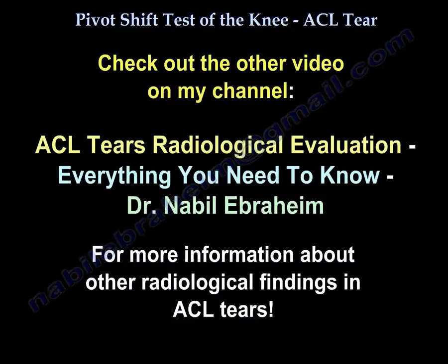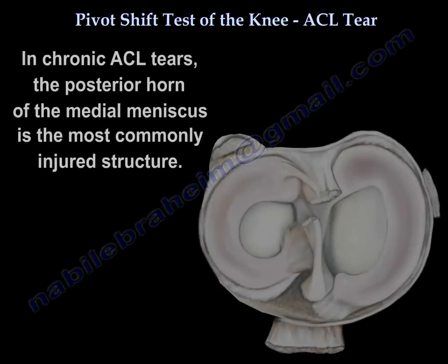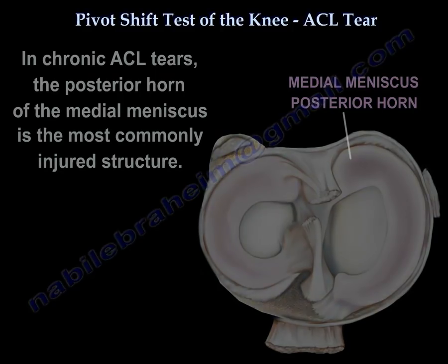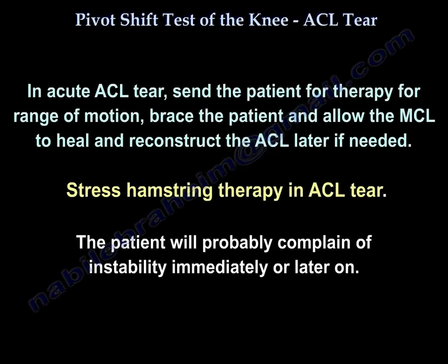Other radiological findings can be seen in ACL tears. In chronic ACL tears, the posterior horn of the medial meniscus is the most commonly injured structure. In acute ACL tear, send the patient for therapy for range of motion, brace the patient and allow the MCL to heal, and reconstruct the ACL later if needed. Stress hamstring therapy in ACL tear. The patient with an ACL tear will probably complain of instability immediately or later on.